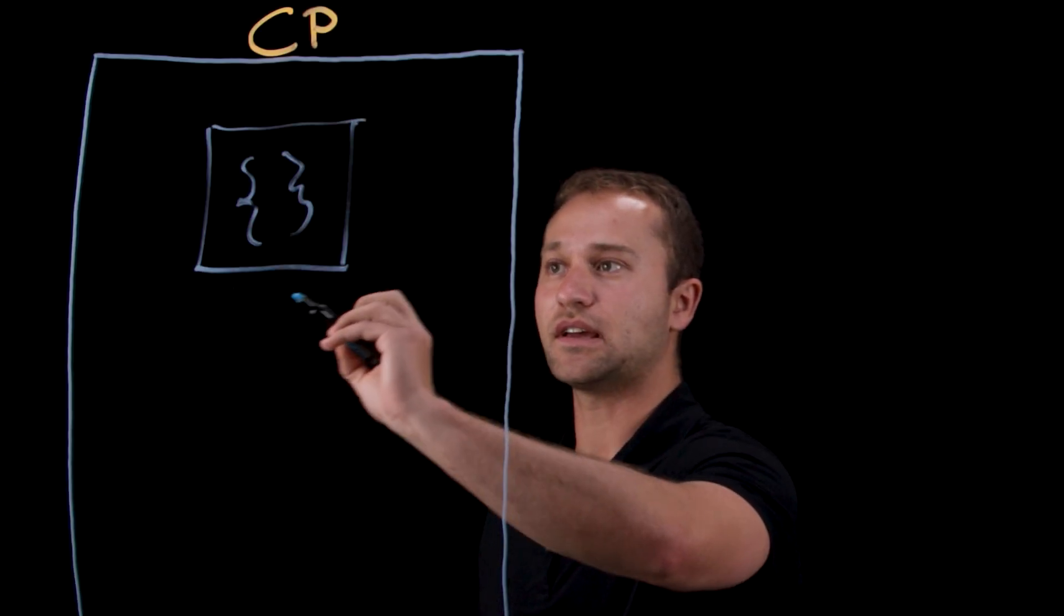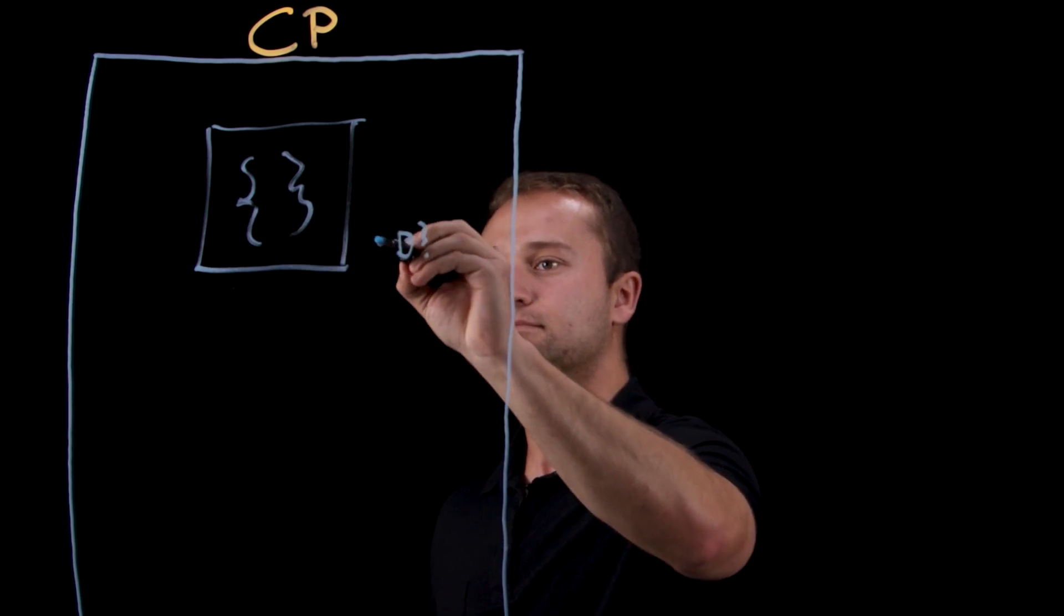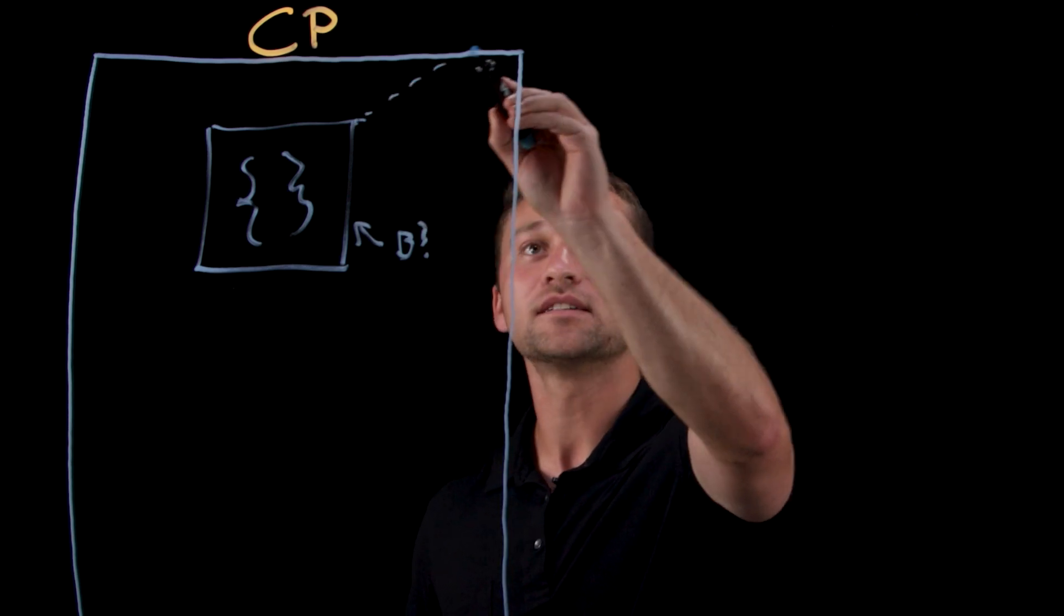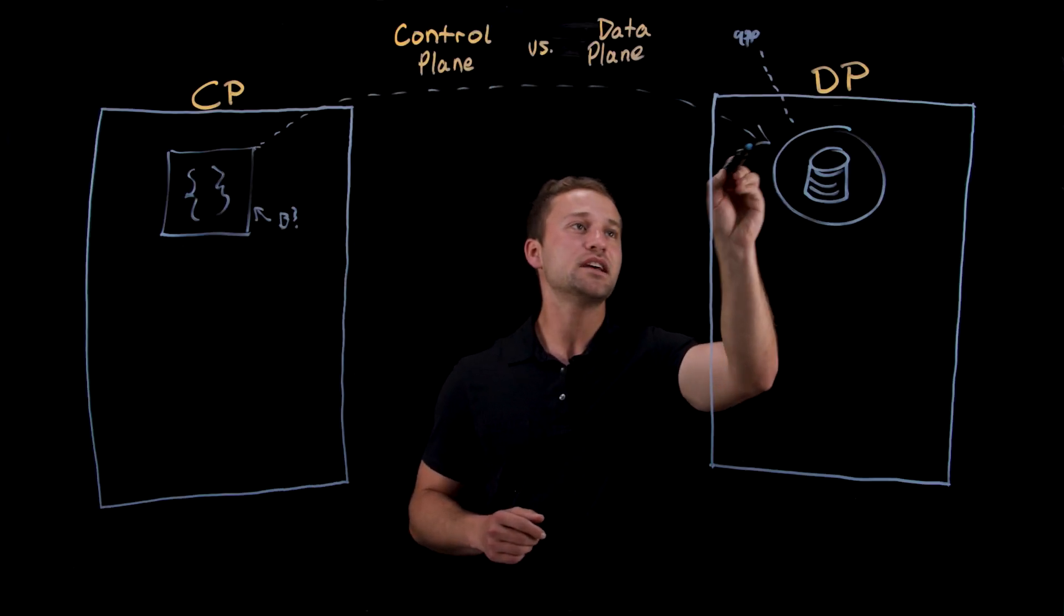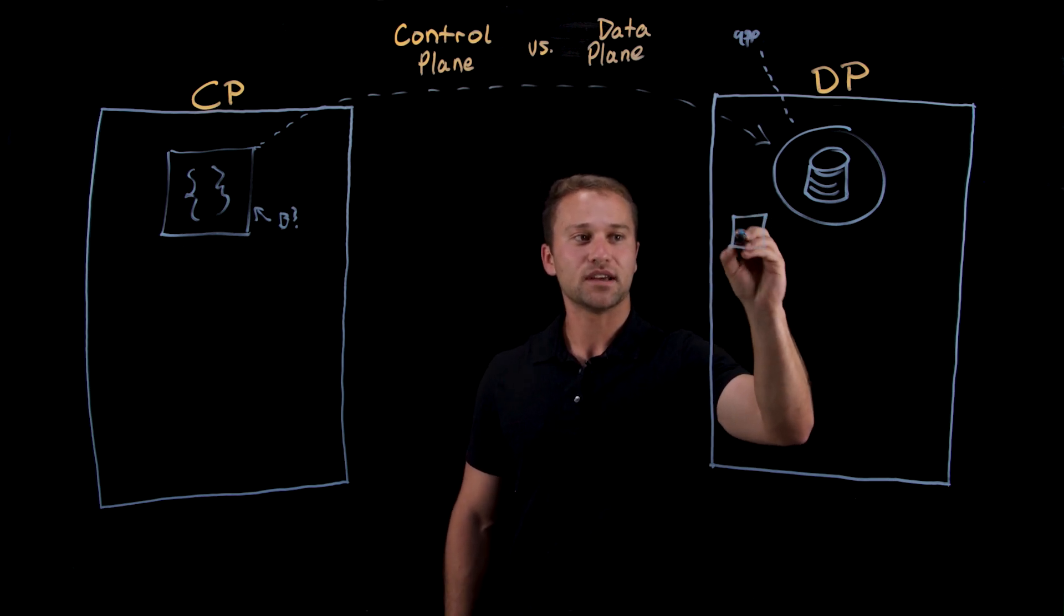So let's say that the customer wants to create a backup, they're going to create a backup, and then that API is going to reach into the data plane, and they're going to create themselves a task.